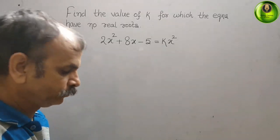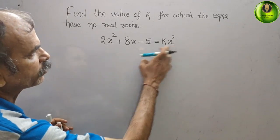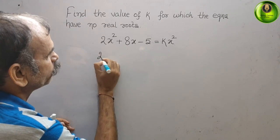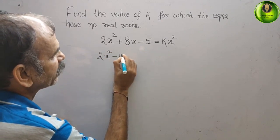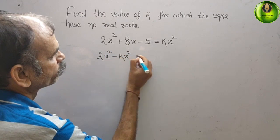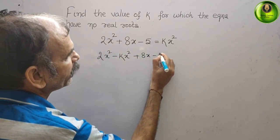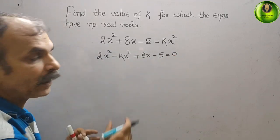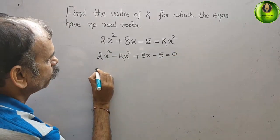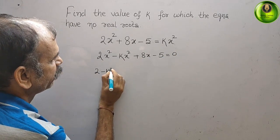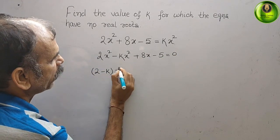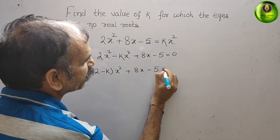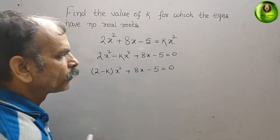It will be what, see this x square is x square we can bring. So now we can say 2x square minus kx square plus 8x minus 5 that gives you 0. Now take x square as common here, you will get 2 minus k into x square plus 8x minus 5 that gives you 0.